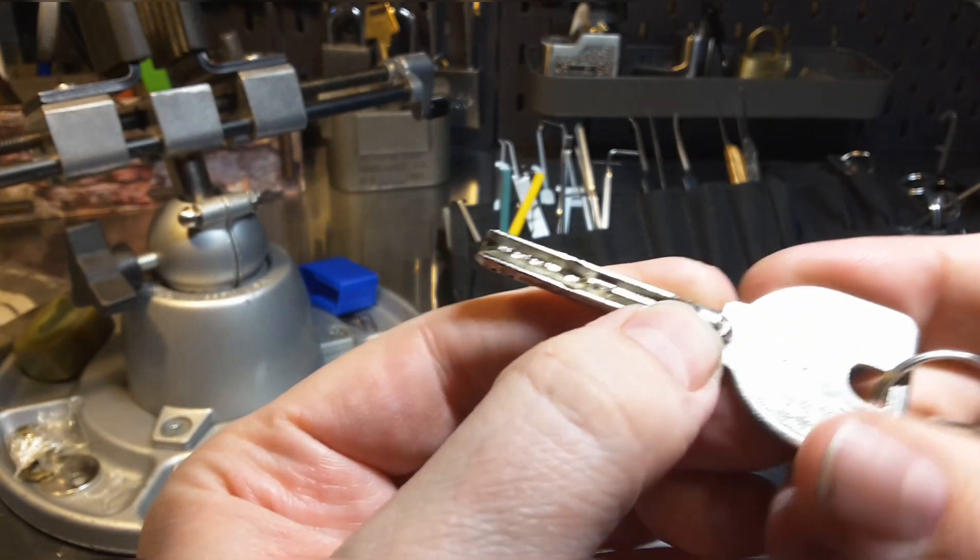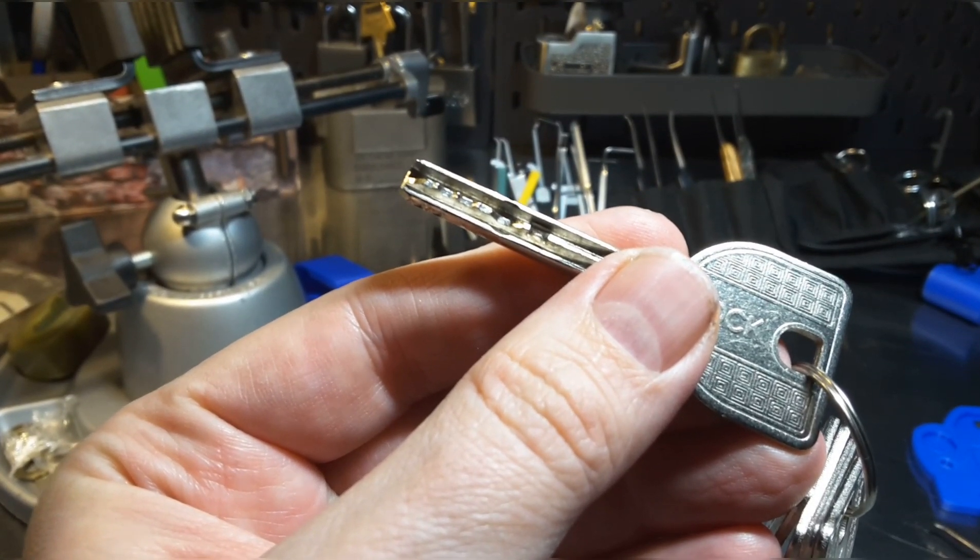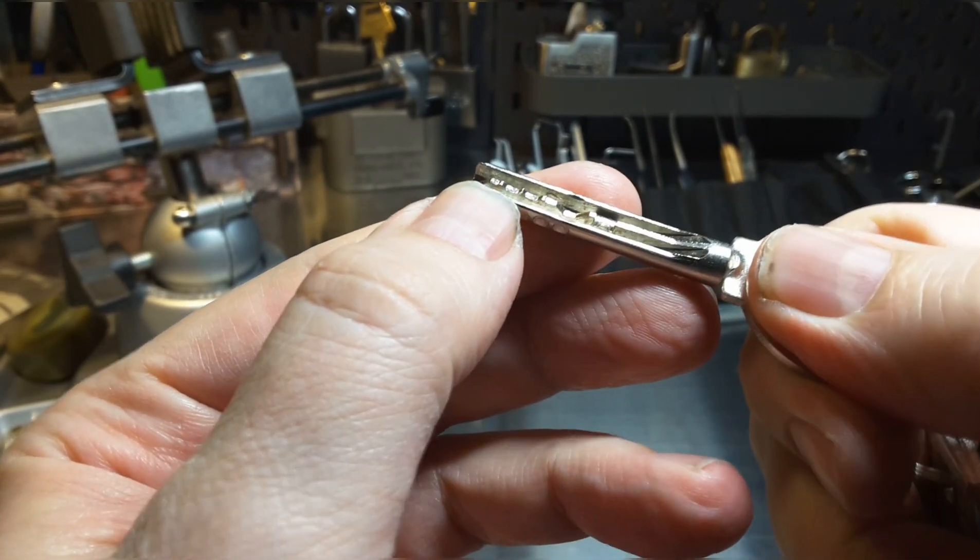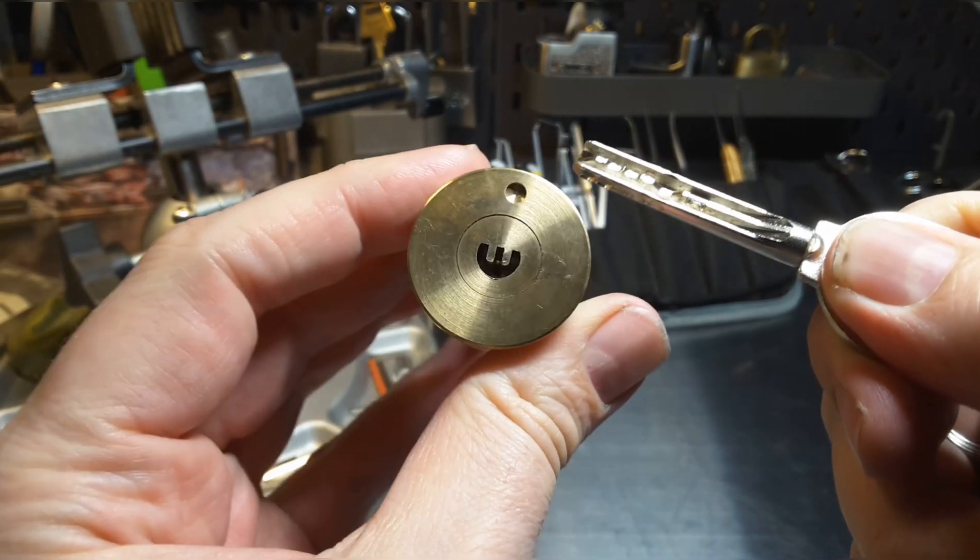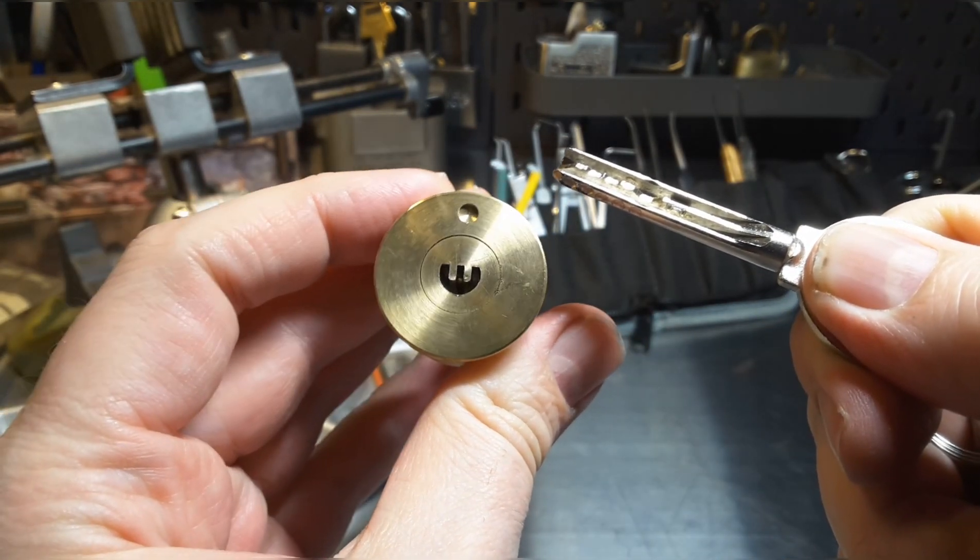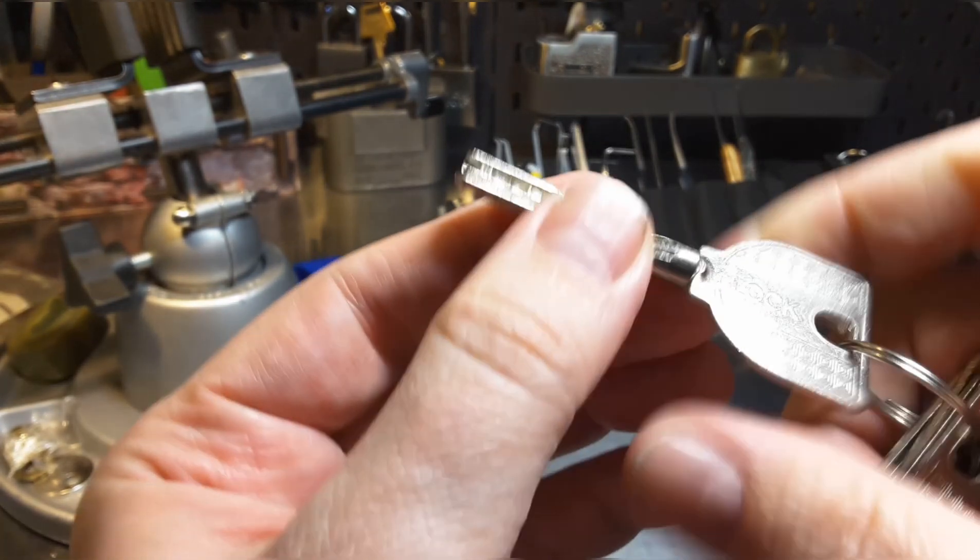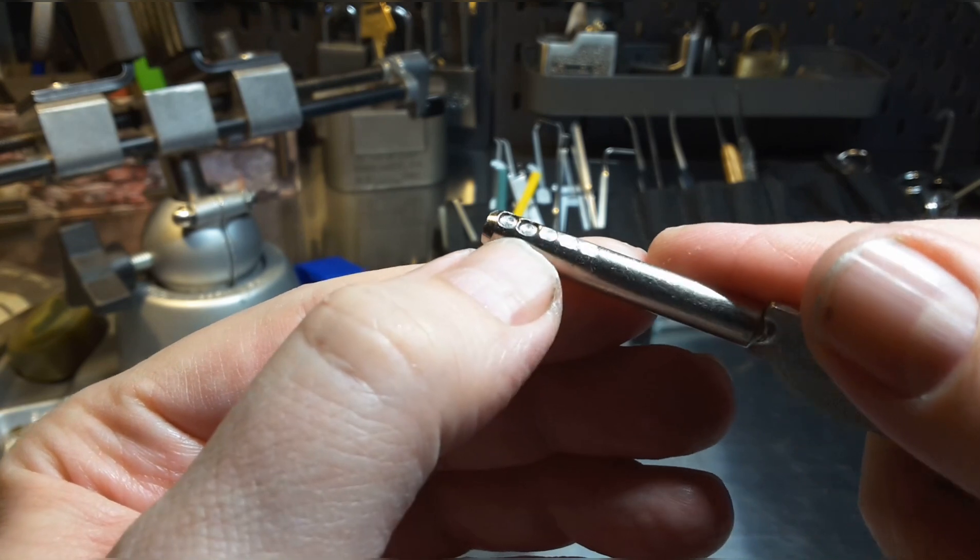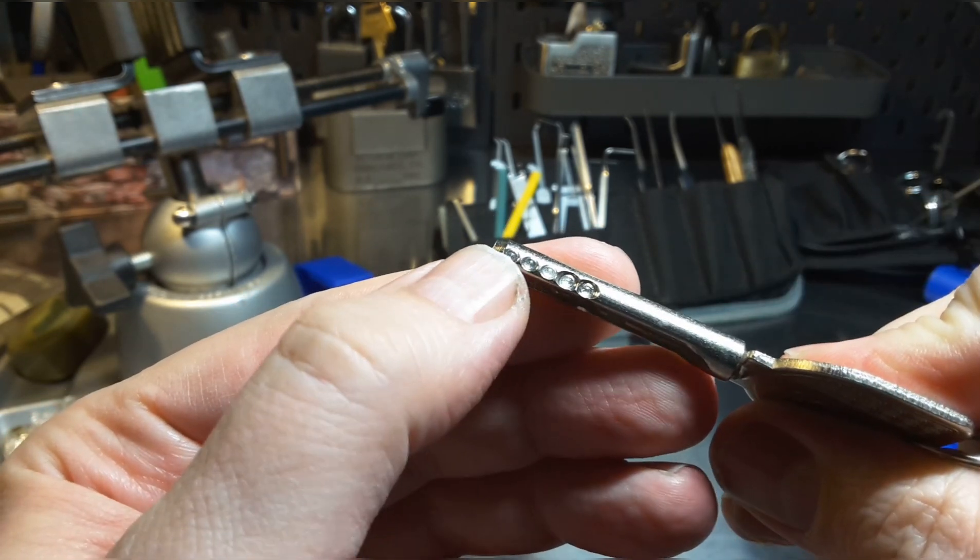The key is really quite unique. As you can see, it has here some dimples and it looks a little bit like a smiley keyway, a little bit narrower. And then when you look at this side of the key, you see here more dimples and here more dimples.